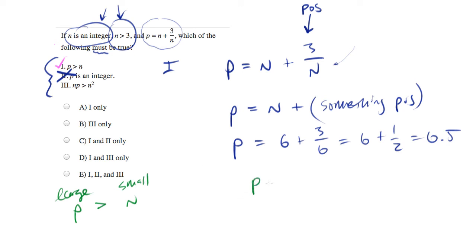When I translate statement number 3, which is N times P greater than N squared, and this is a question, what I'm going to get is small times large, right, N times P, greater than small times small.